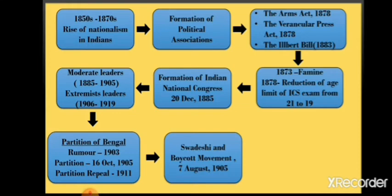In the previous parts we have already covered the time period from 1870 till 1906. In this part we will learn about the major events of the Indian National Movement that took place between 1907 and 1915. Before coming to the new topics, let us revise what we have learned. We have learned about the rise of nationalism in Indians — that period was from 1850 to 1870.